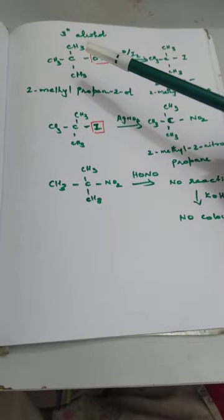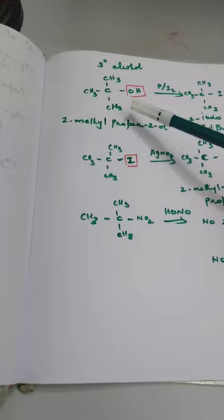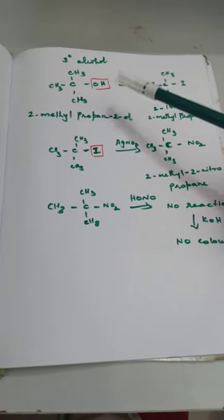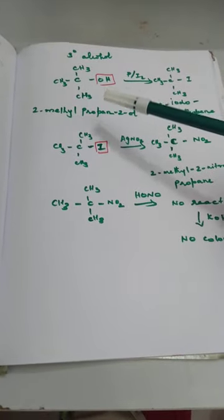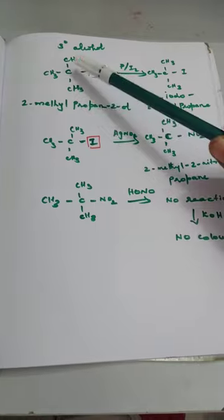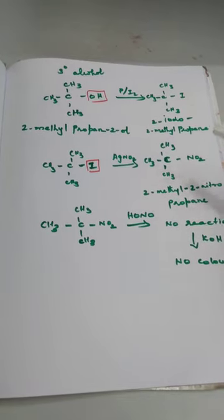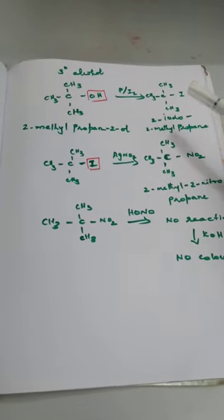Now let us look at the reaction with tertiary alcohol. In tertiary alcohol, the OH group is attached to a carbon that is surrounded by three R groups. Taking 2-methylpropan-2-ol as the example, the longest chain is selected as 1, 2, 3 propane. In the second carbon, a methyl group and the OH group are both attached. In Step 1, reaction with P and I2 replaces OH with I. The product is 2-iodo-2-methylpropane, since iodine comes before methyl alphabetically.